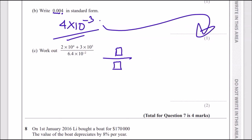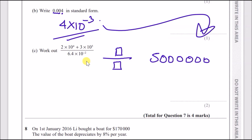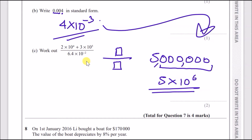So type in: (2×10⁴ + 3×10⁵) divided by (6.4×10⁻²). My calculator gives 500,000,000 — that's five hundred million, not five million, my mistake. If you want it in standard form, you have six zeros after the five, so it'd be 5×10⁸. Either form is fine since the question doesn't specify.